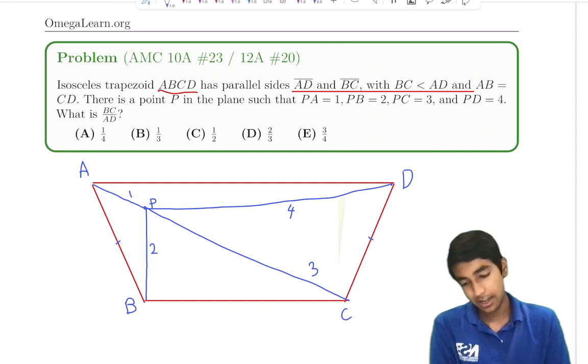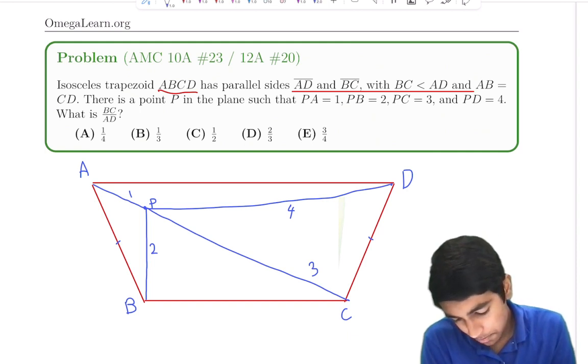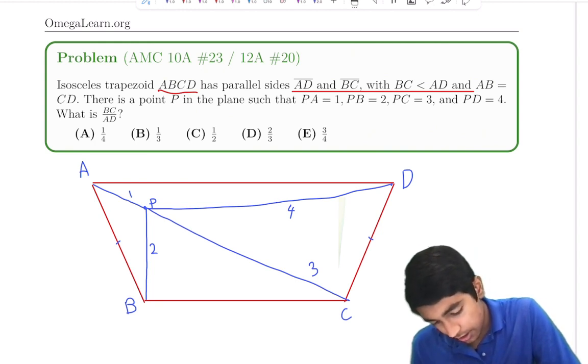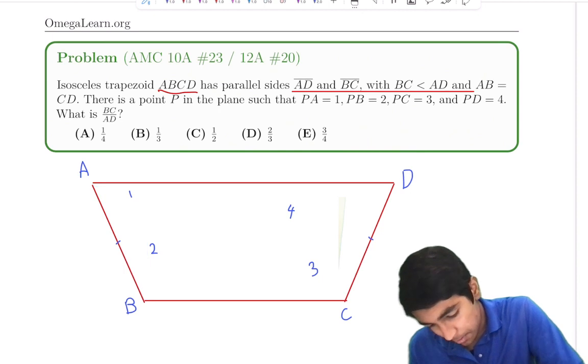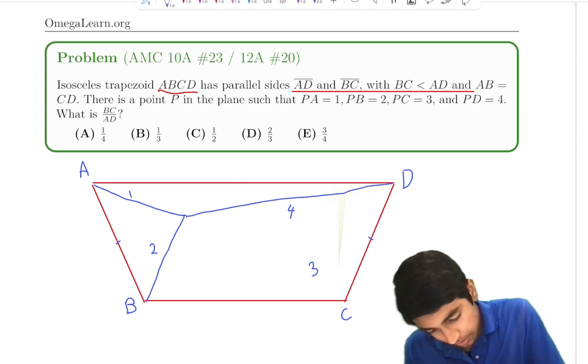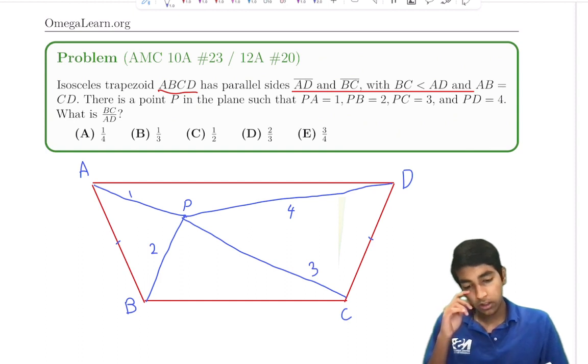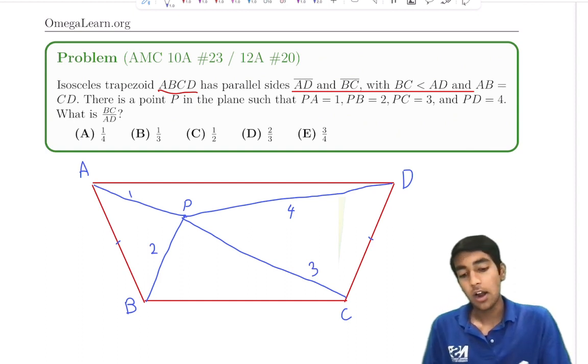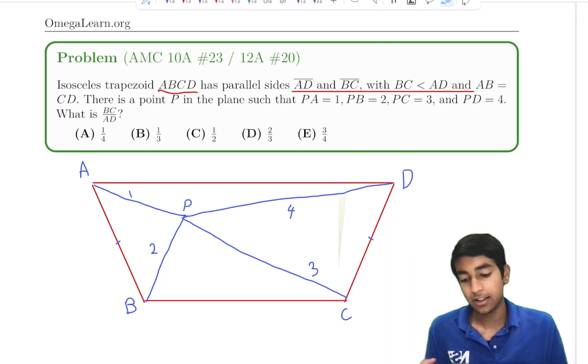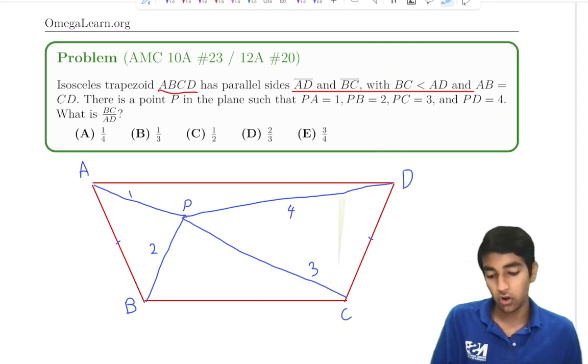This seems pretty tricky because we've got a bunch of lengths and we don't really know how to operate from here. Let's actually shift this point just a little bit, so this is our point P in the center. We somehow try to use this information of the lengths to find what the ratio of the side lengths are. The key thing here is we're only looking for a ratio, not the side lengths AD and BC themselves. Just the ratio is all we need.